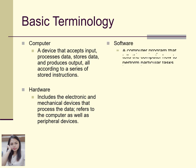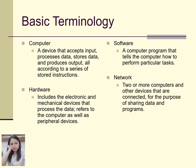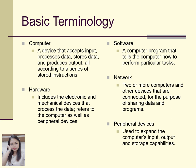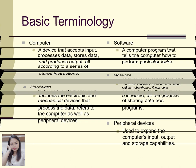Software is a computer program that tells the computer how to perform particular tasks. A network consists of two or more computers and other devices that are connected for the purpose of sharing data and programs. Peripheral devices are used to expand the computer's input, output, and storage capabilities.